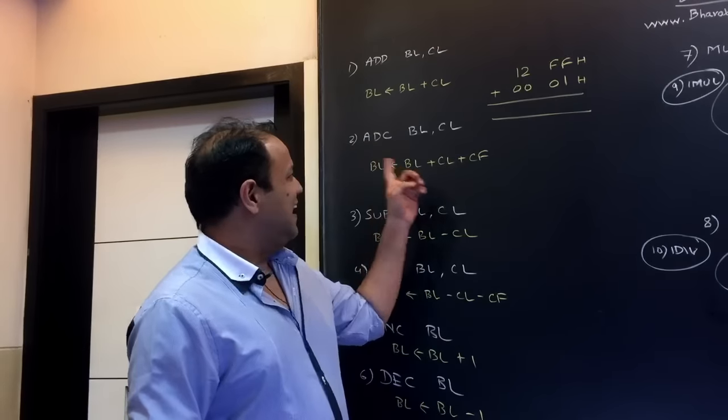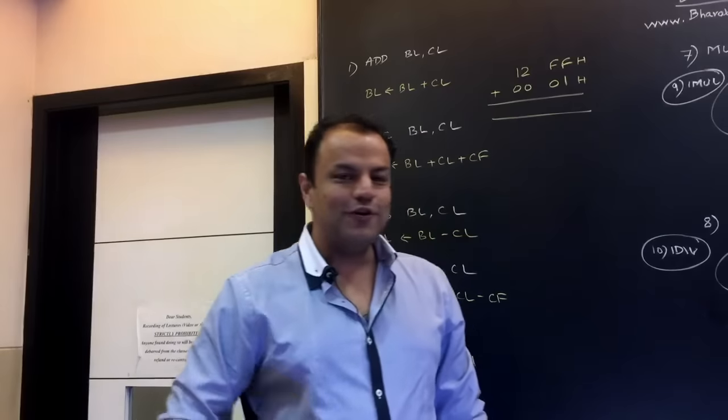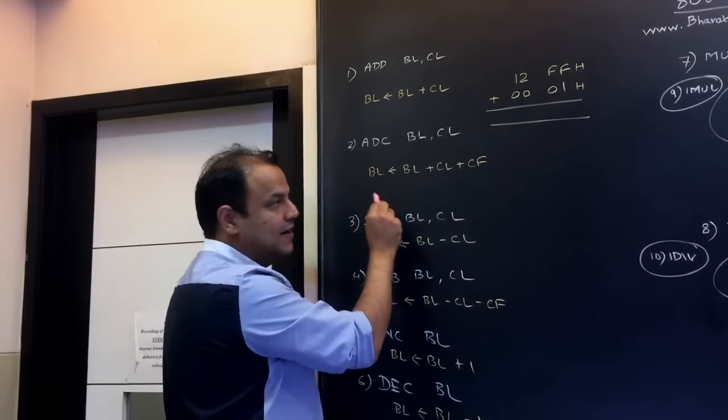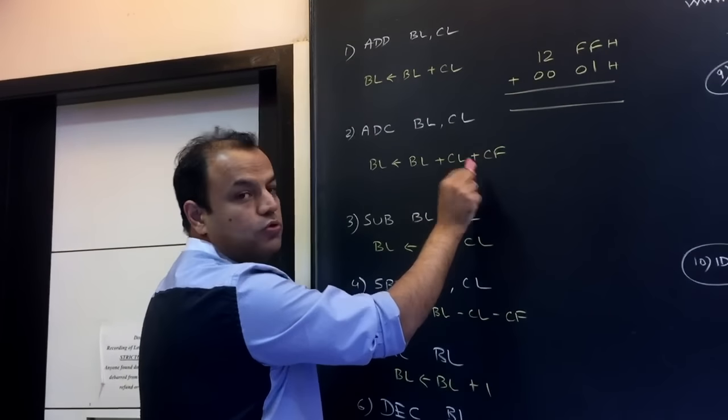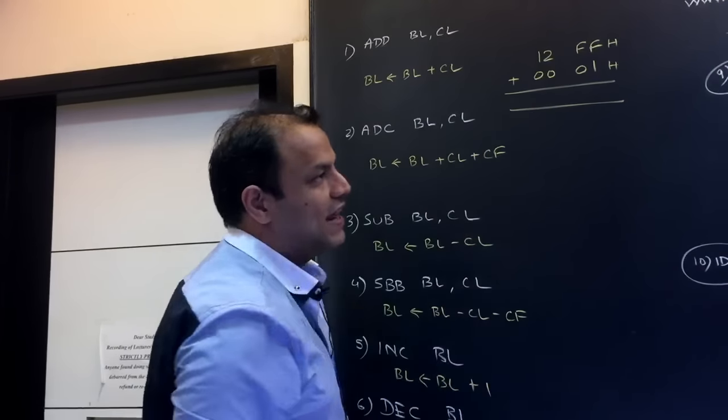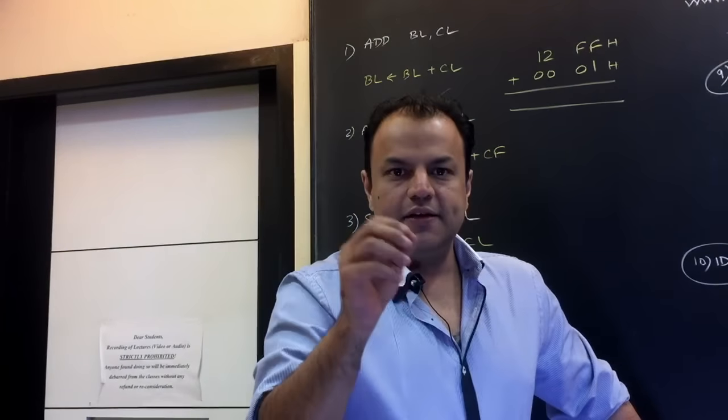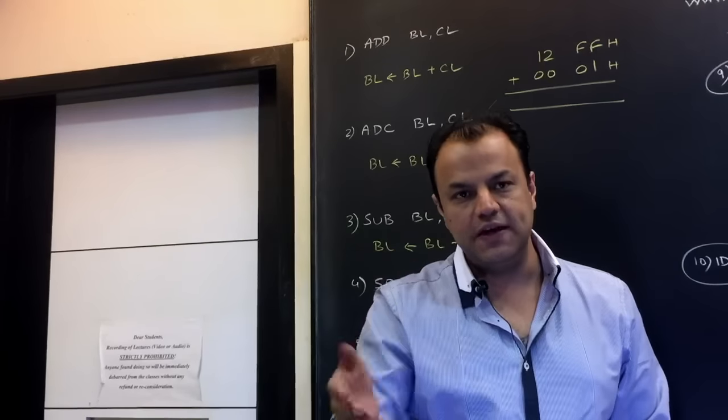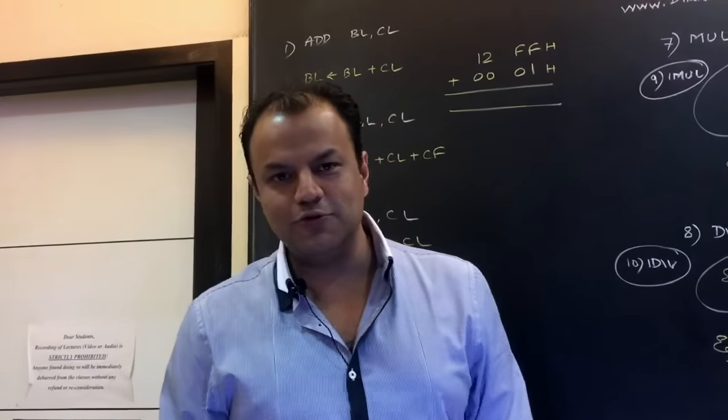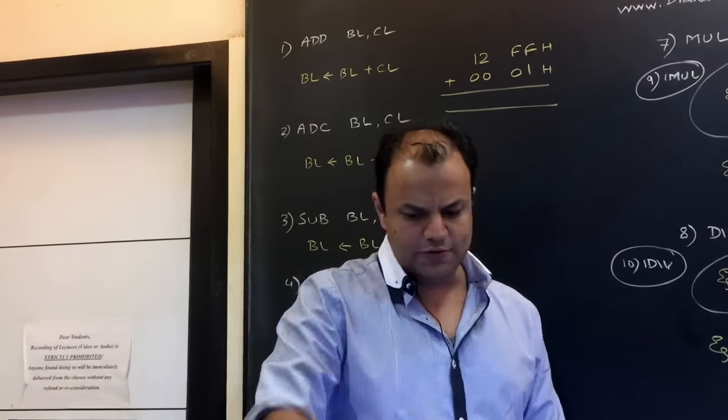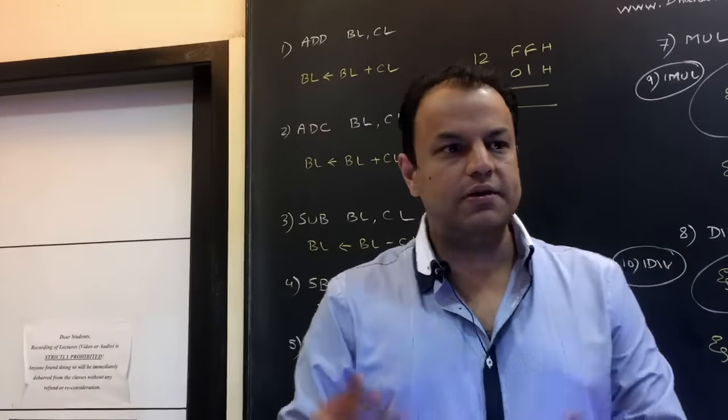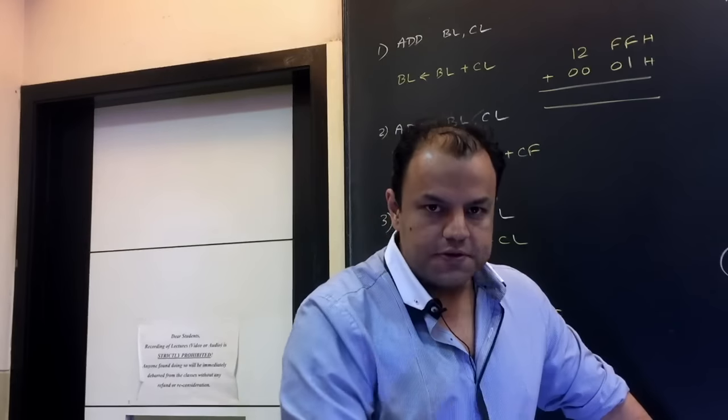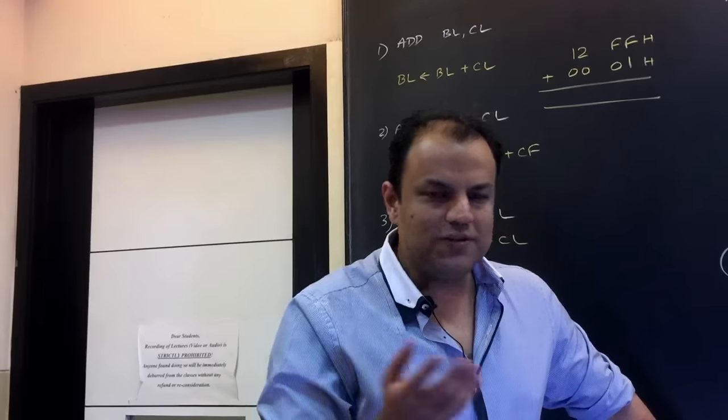Now an interesting instruction: ADC BL, CL. ADC stands for add with carry. It will do the same addition. BL plus CL will store the result again in BL. But this time, it will add also the value of the carry flag. So the operation is BL plus CL plus carry flag. Now carry flag is a bit, so it can be 0 or 1. If carry flag was 0, this is the same as add BL, CL. If carry flag is 1, the answer won't be entirely different. It will be almost the same plus 1 to it. The question is, when do you use add with carry? What does this instruction mean? All these instructions have very peculiar uses.